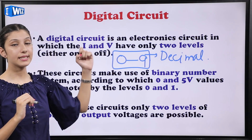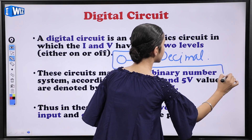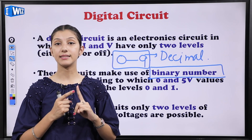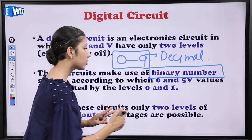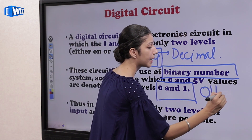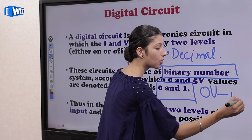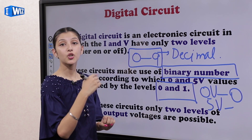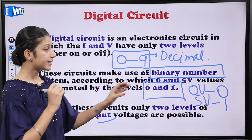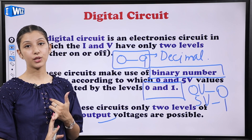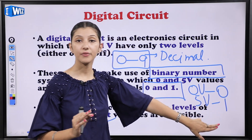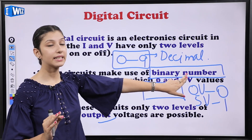But jis system pe humare paas digital circuits kaam karti hain, that number system is known as binary number system. Binary number system mein humare paas sirf do values possible hoti hain — zero and one. Agar mujhe decimal zero volt ko binary mein represent karna hai toh mein usko represent karungi through zero, and agar mujhe five volt ko represent karna hai in binary toh it will be represented as one. Sirf zero aur one mein hi saari baatein hongi. Un circuits mein jo input and output ki values rehengi, woh in terms of zero and one — binary number system mein hogi.